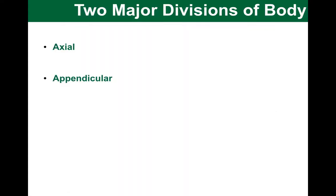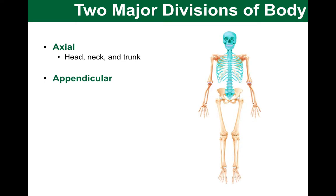Now, I want to introduce you to the concept that the body can be divided into two major parts: the axial body and the appendicular body. The axial body, shown in blue-turquoise on this figure, is composed of the head, neck, and trunk. The appendicular body is made of the limbs — the legs and arms of the individual. Those are our first way of dividing the body into different sections.